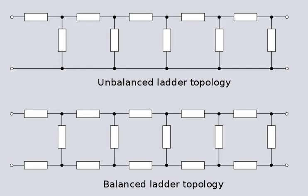A tree is a graph in which all the nodes are connected, either directly or indirectly by branches, but without forming any closed loops. Since there are no closed loops, there are no currents in a tree. In network analysis, we are interested in spanning trees — trees that connect every node present in the graph of the network. A given network graph can contain a number of different trees. The branches removed from a graph in order to form a tree are called links; the branches remaining in the tree are called twigs.